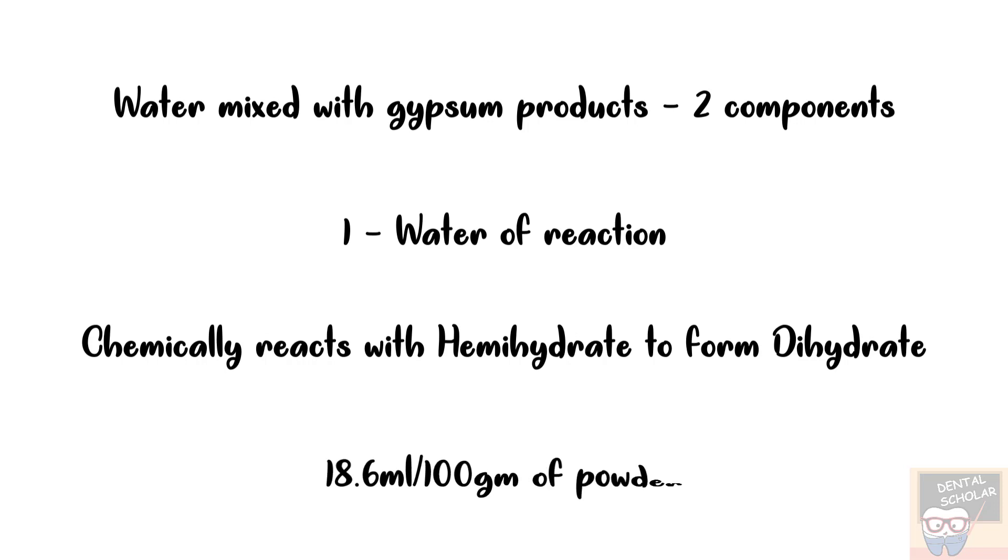So whether it is type 1 or type 5, it will always be 18.6 milliliter per 100 gram of powder.